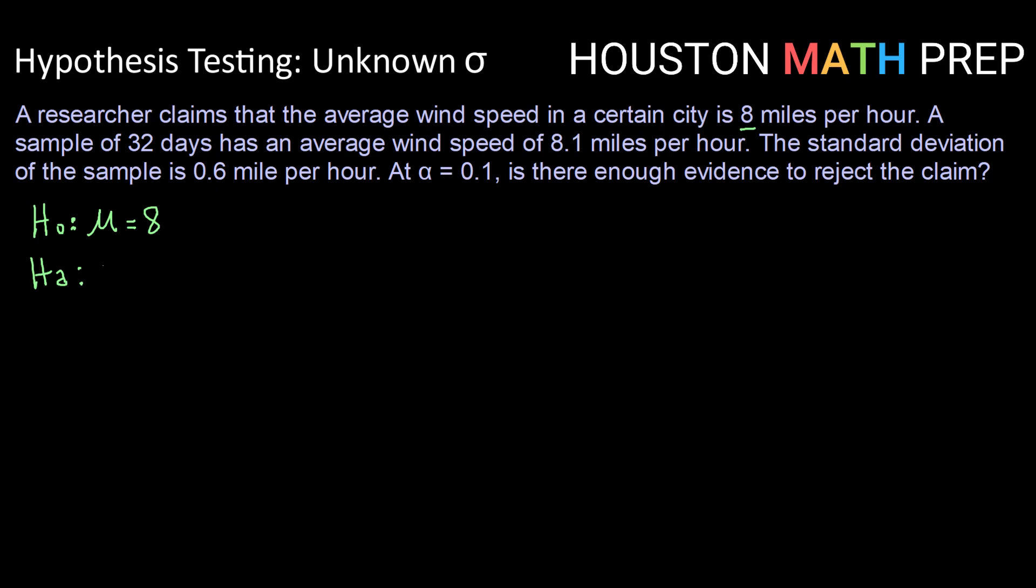And we are just looking at, is there enough evidence to say anything different? So is there enough evidence to say that mu is not equal to 8? So that means with a not equal alternative hypothesis, we are going to be looking at a two-sided test.